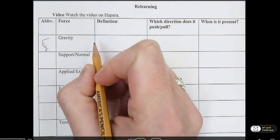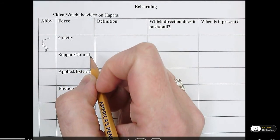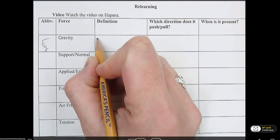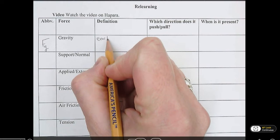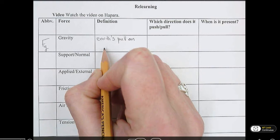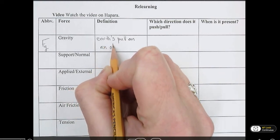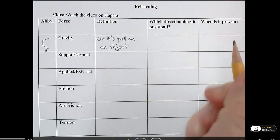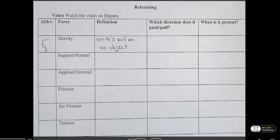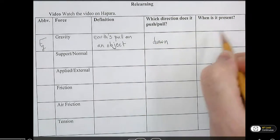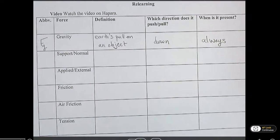For now, we're going to use a sort of general description of gravity, which is Earth pull on an object. When we actually study gravity, we'll learn it's something slightly different than that, but for now this is the definition we'll work with. What direction does it pull? It pulls down, and it's always present. Again, these are things you just need to remember.